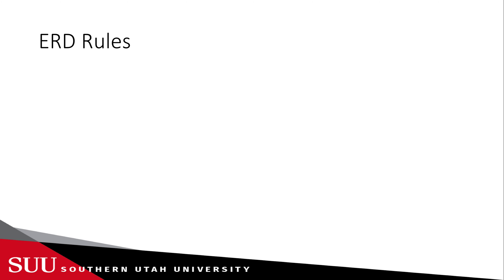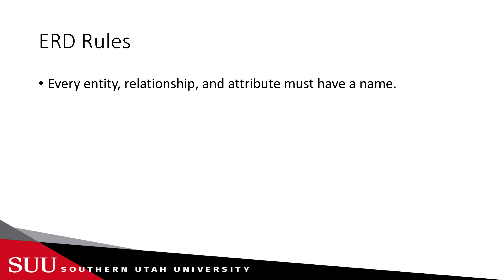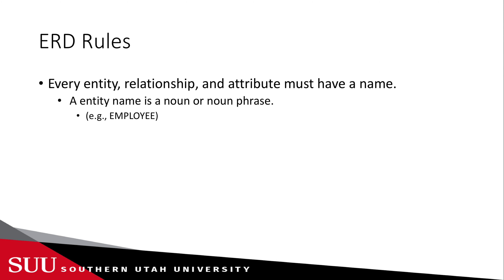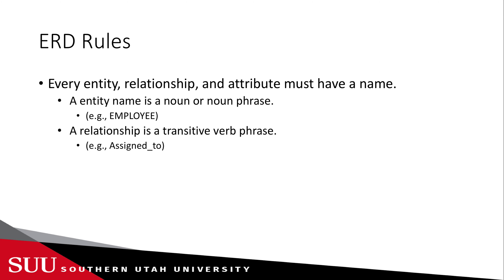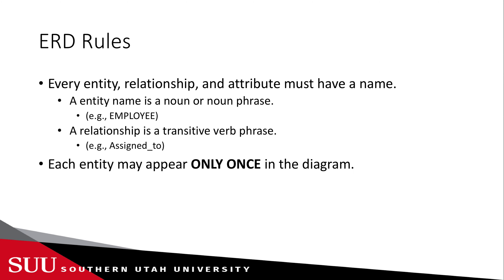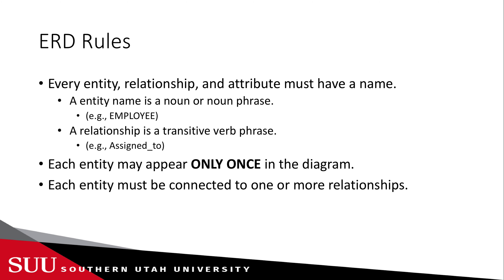Let's start by reviewing the ERD rules. For every entity, relationship, and attribute, these must have names. An entity name is a noun or a noun phrase — like 'employee' for example. A relationship is a transitive verb phrase, like 'assigned to.' Each entity can appear only once in the diagram, so you cannot repeat the same entity name.